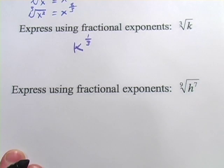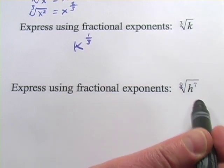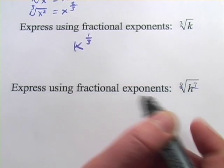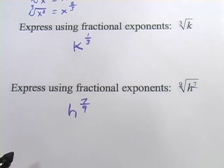And finally, we have the 9th root of h to the 7th. And remember, the root is your denominator, the power is your numerator, so this is just h to the 7 ninths power. And that's really all there is to converting radicals into fractional exponents.